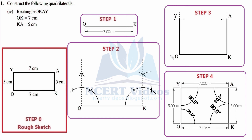After adjusting the compasses to 5 centimeters, we put the needle at O and intersect the dotted line we previously drew with a small arc. Wherever it intersects on that dotted line, the distance from O to that point equals 5 centimeters. We lift the needle, place it at K, and repeat the same process — the distance from K to the intersected point on that dotted line also equals 5 centimeters. We then take a ruler and connect each intersected point with its respective vertex O and K, as shown in Step 3.